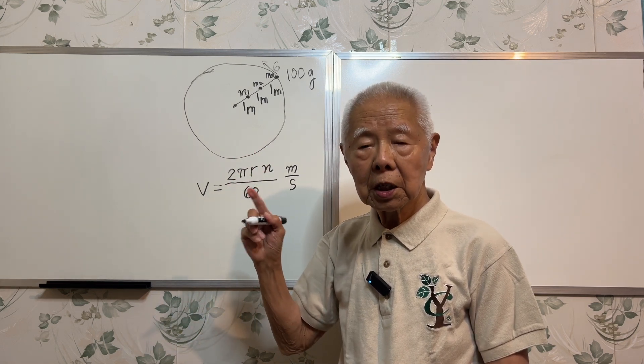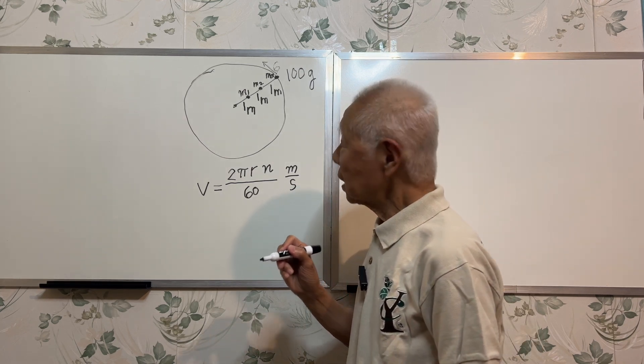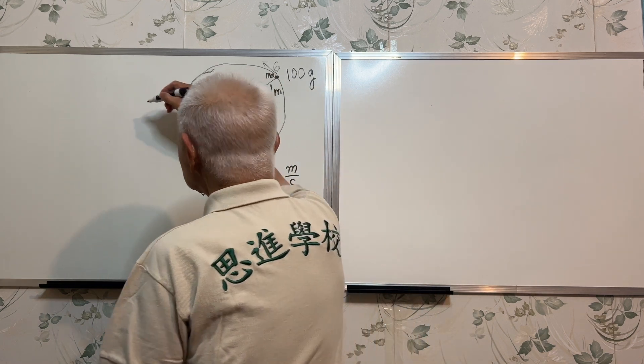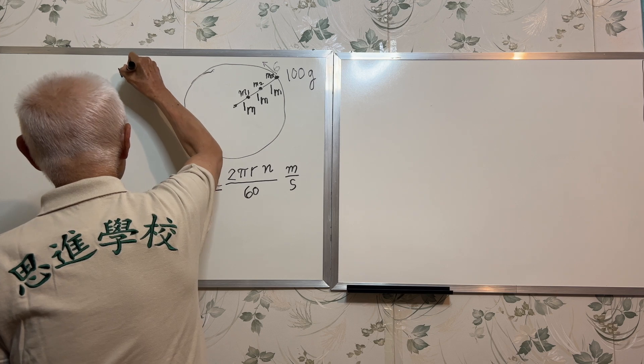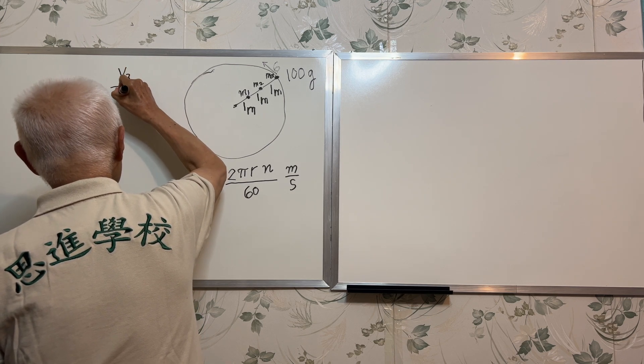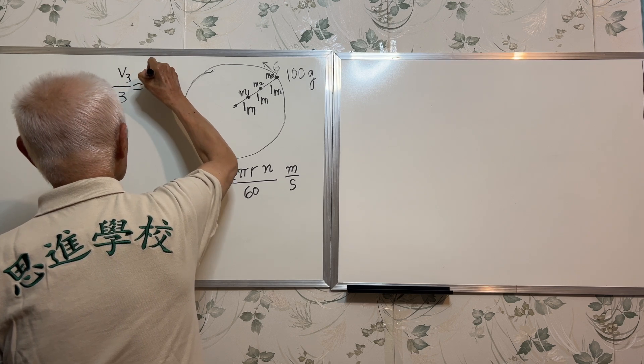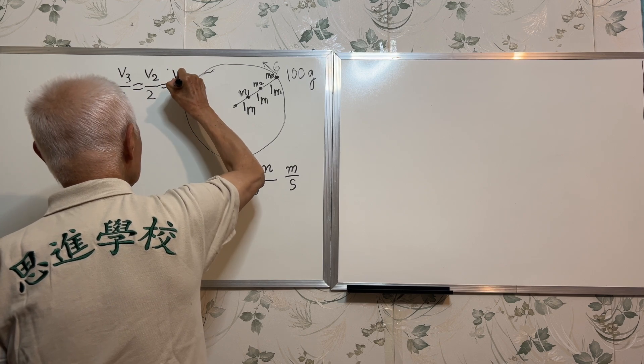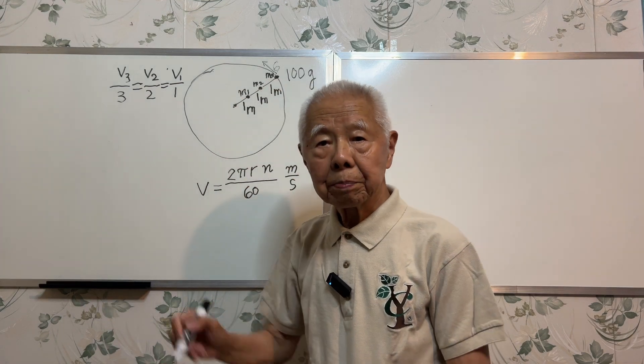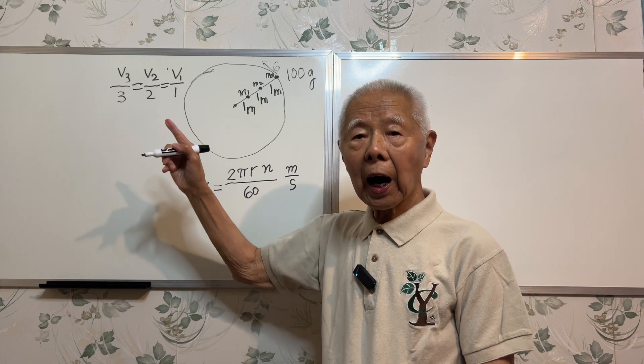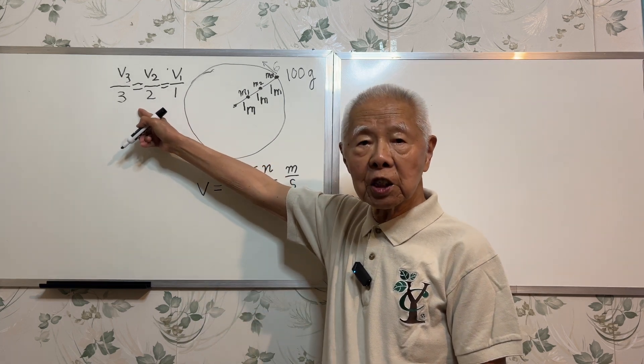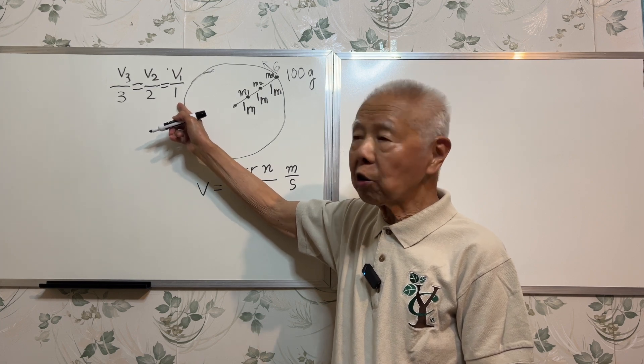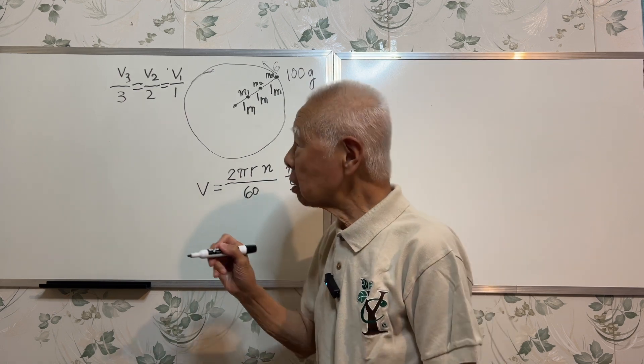I can call them m1, m2, m3, and the velocity 6 meters per second I can call it v3. Because the velocity is proportional to radius, I can write v3 over 3, this 3 is 3 meters, equals v2 over 2, equals v1 over 1.